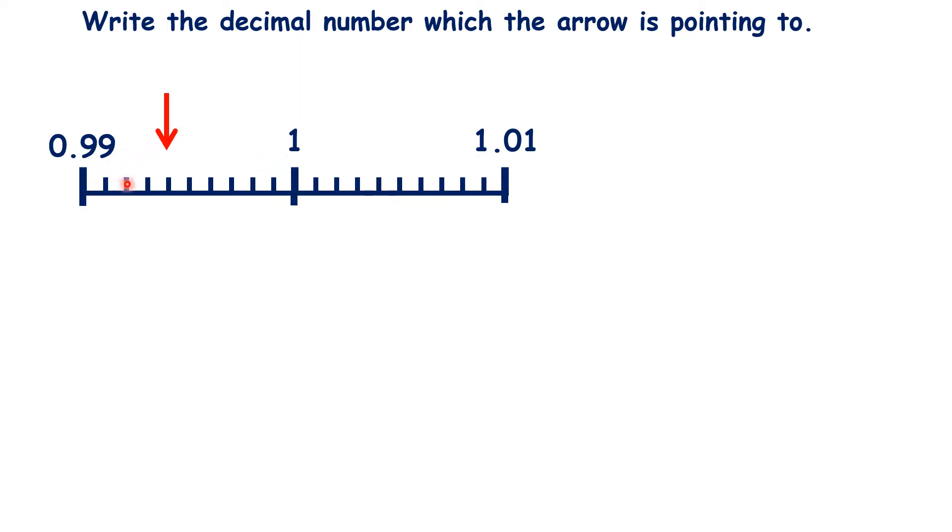So again, the lines between the numbers we have labeled must be thousandths. So this arrow is pointing to 0.994, this arrow is pointing to 1.001, this arrow is pointing to 1.004, and what number is this arrow pointing to?